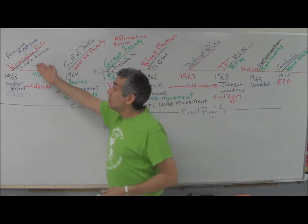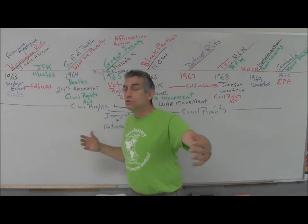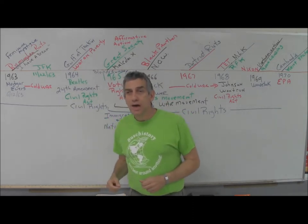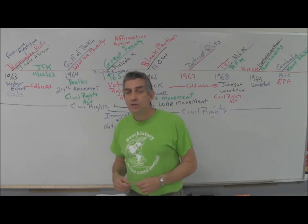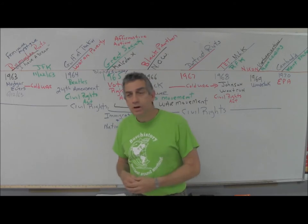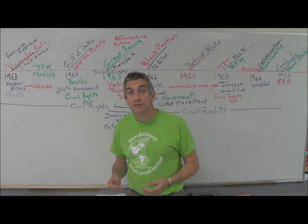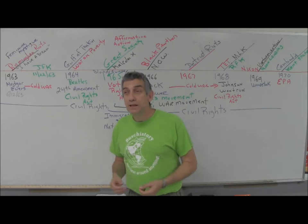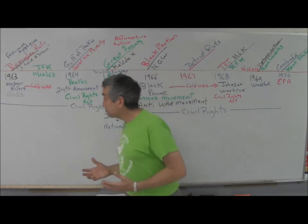This all becomes the impetus for John Kennedy allowing the March on Washington in August of 1963, which culminates in Martin Luther King's 'I Have a Dream' speech. He's the final speaker and he talks about this idyllic world where black children and white children are playing together, getting along very nicely.